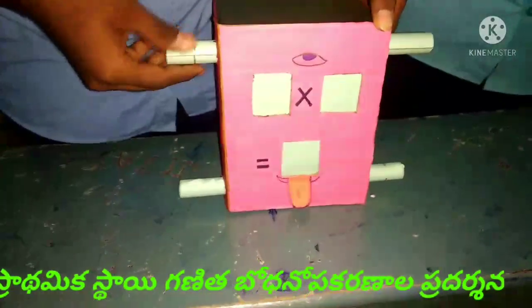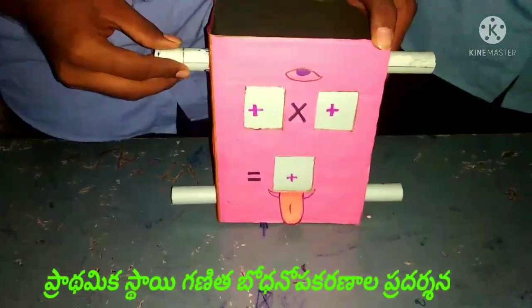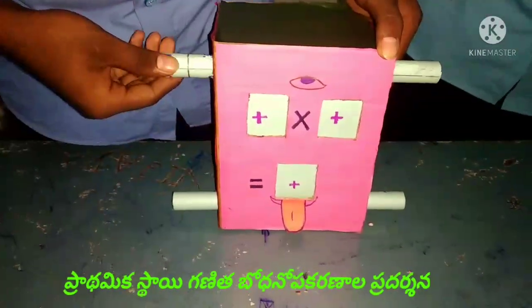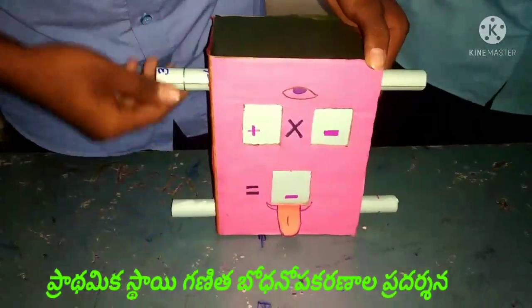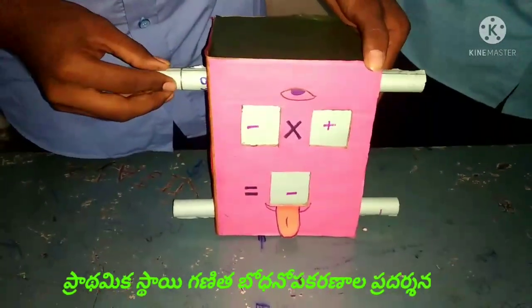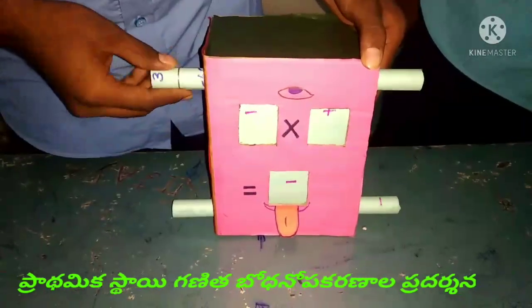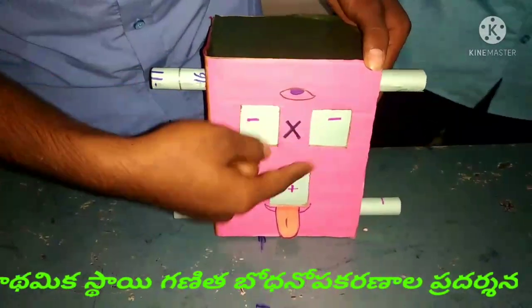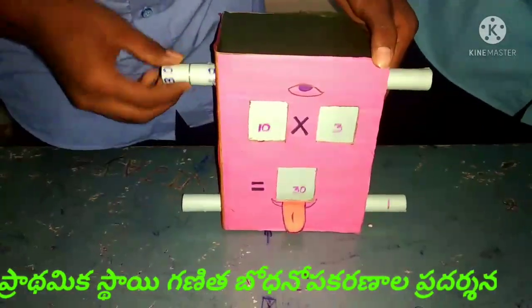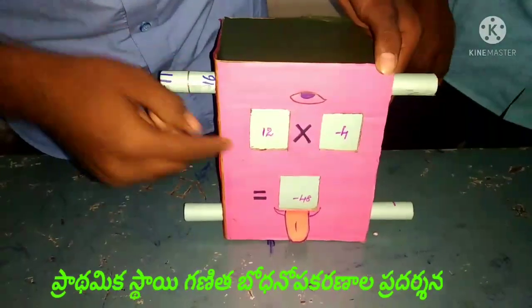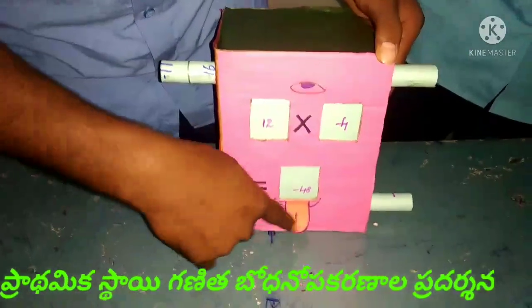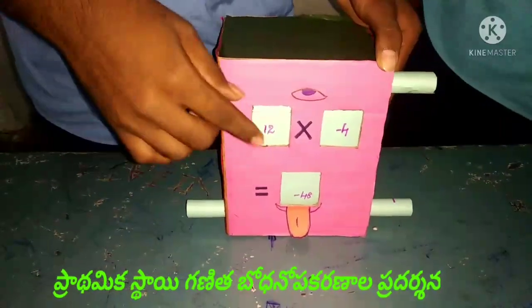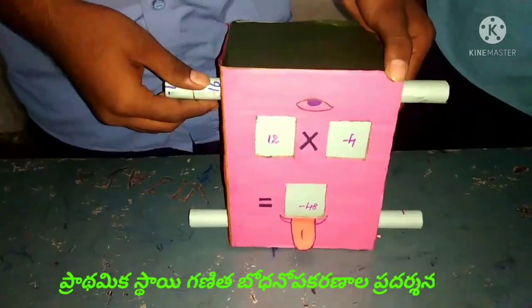Simple multiplication rules: plus into plus equals plus. Plus into minus equals minus. Minus into plus equals minus. Minus into minus equals plus. Example: minus 12 into minus 4. This is your task as concept usage.